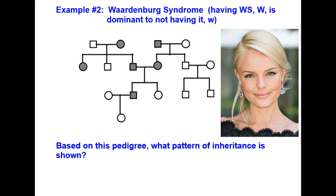You may recognize this female pictured here — her name is Kate Bosworth. Kate has two different colored eyes, and in fact one of them also has two different colors within the same eye. She also has a white forelock of hair right here on the front of her hairline. She exhibits two of the symptoms of Waardenburg syndrome and she's a famous actress.